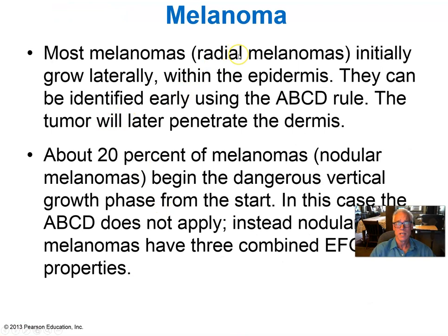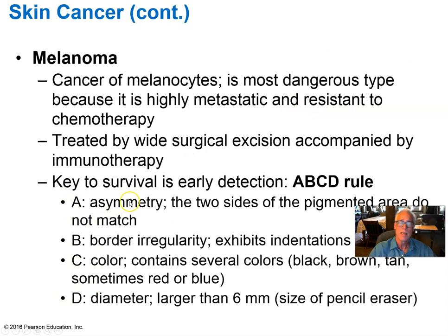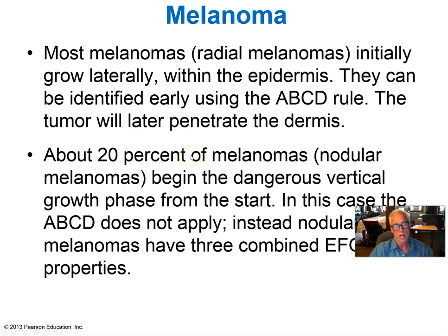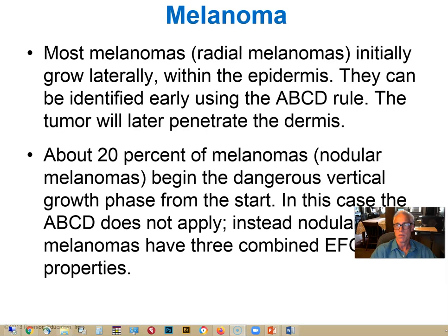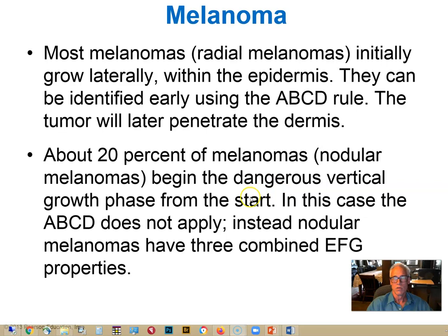Most melanomas are radial melanomas, meaning they grow horizontally under the surface of the epidermis, remaining superficial to the basement membrane for a while. The ABCD rule allows identification before they penetrate down into the dermis and cells begin to spread throughout the body in metastasis. However, some melanomas are nodular melanomas, which almost immediately begin to dig down into the tissues under the epidermis like the roots of a tree, potentially metastasizing before we even notice them.